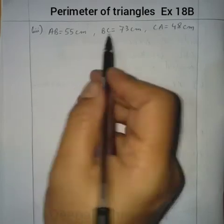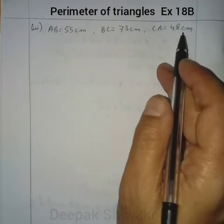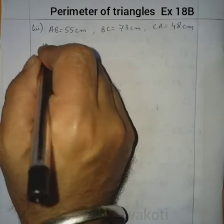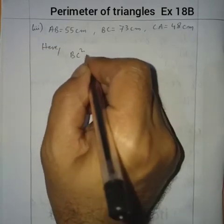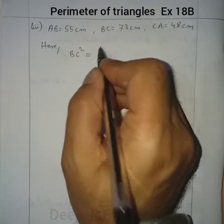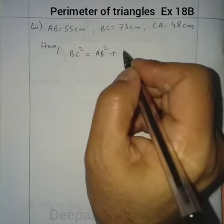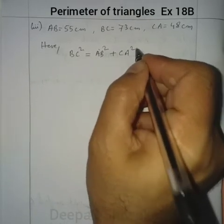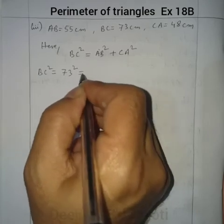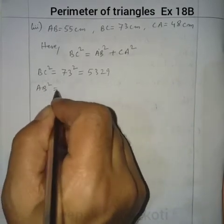For the third set, three sides are given: AB = 55 cm, BC = 73 cm, and CA = 48 cm. Among these, 73 cm is the longest, so take it as the hypotenuse. If it is a right-angled triangle, BC² should equal AB² + CA². BC² = 73² = 5329.